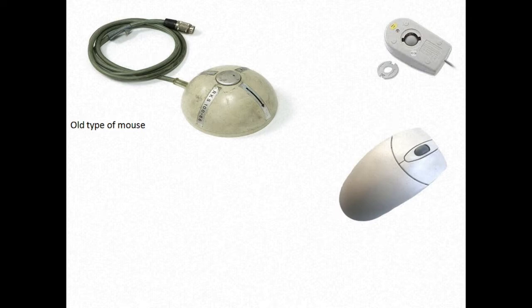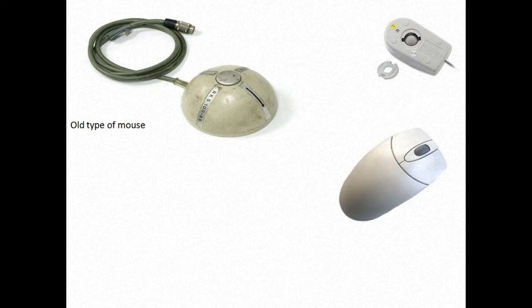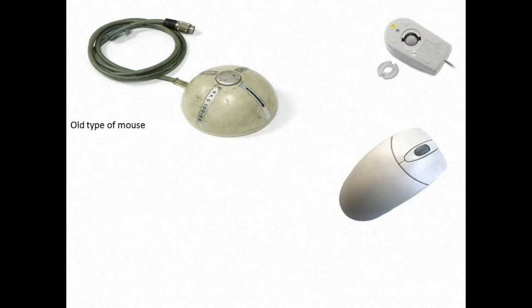The mouse is a pointing device. It is used to select, click, and close — it acts as a shortcut for the keyboard, allowing us to do many things directly with the mouse instead of using the keyboard. The first type is the old mechanical mouse. In some mouse you will see they have three buttons.